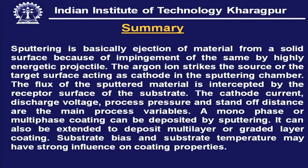In summary, sputtering is the ejection of material from a solid surface due to impingement by highly energetic projectiles. Argon ions strike the source target acting as cathode in the sputtering chamber. The flux of sputtered material is intercepted by the substrate. Cathode current, discharge voltage, process pressure, and stand-off distance are the main process variables. A monophase or multiphase coating can be deposited, extended to multilayer or graded layer coatings. Substrate bias and substrate temperature may have a strong influence on coating properties.